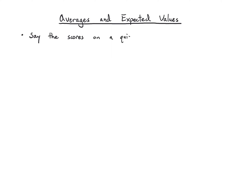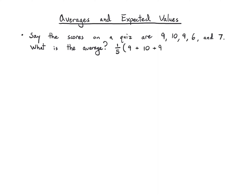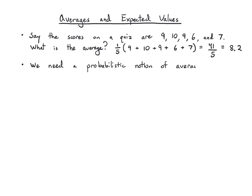Let's talk about the idea of expectation, which we'll also call expected values or average and many other terms. Let's start with a little example that should be familiar. Say we administer a quiz and the scores are 9, 10, 9, 6, and 7. The average score is just the sum of these five scores divided by 5, which gives 41 over 5, or 8.2. We want to develop a probabilistic notion of averaging — how do we translate this idea of an average into our probability framework?